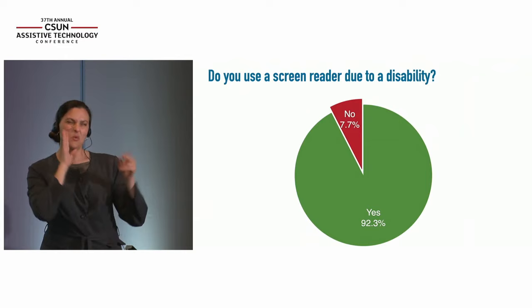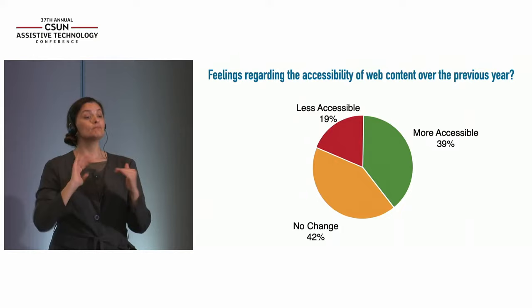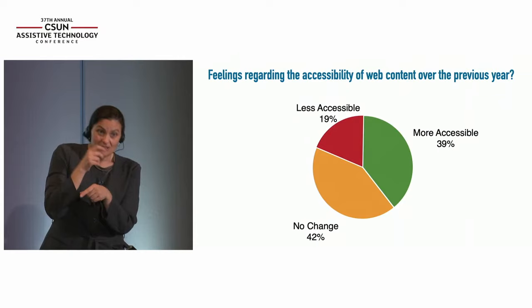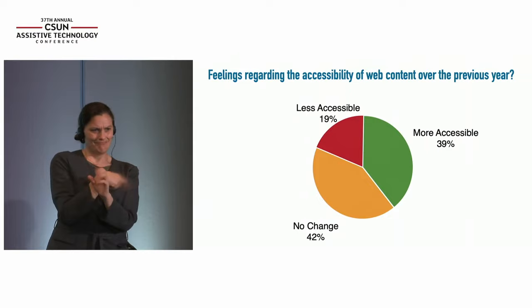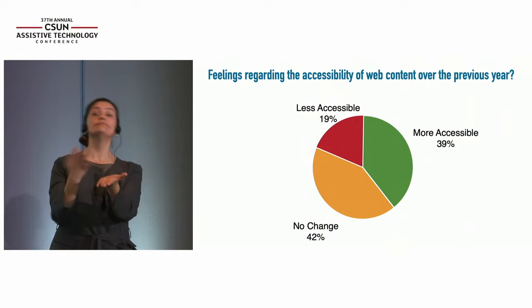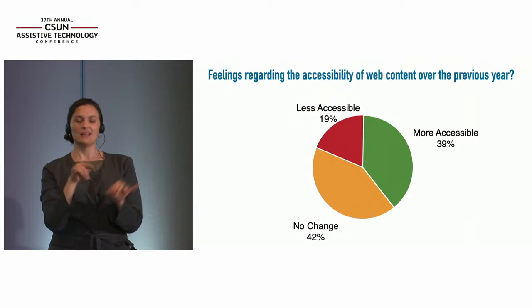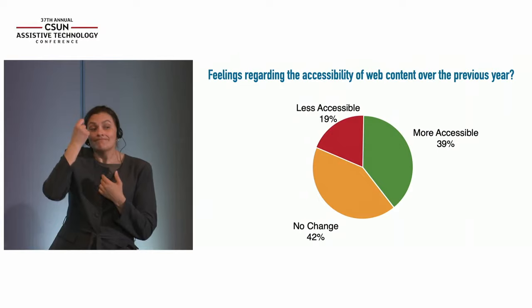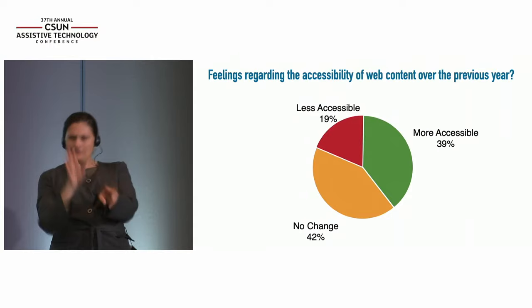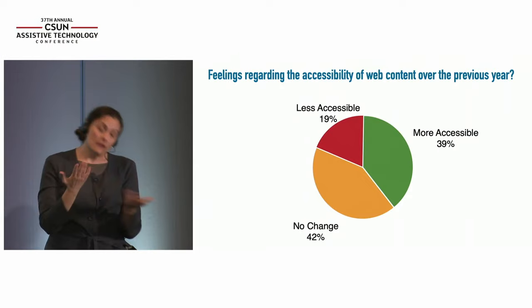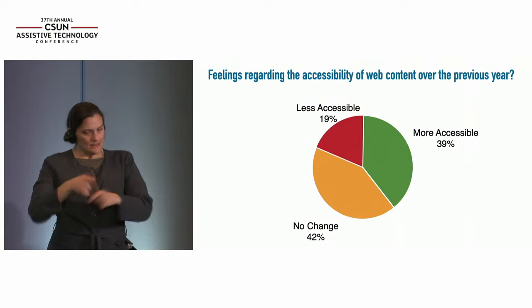One question we ask in almost all surveys is about feelings regarding the accessibility of web content over the previous year — whether things became more accessible, less accessible, or no change. In our last screen reader user survey, 39% indicated things became more accessible, 42% indicated no change, and 19% less accessible. This area has seen slowly increasing indication that things have gotten better. The fact that only 39% thought things got better tells us we have more work to do, but that number is increasing slowly over time. Keep up your efforts — it is making a difference.